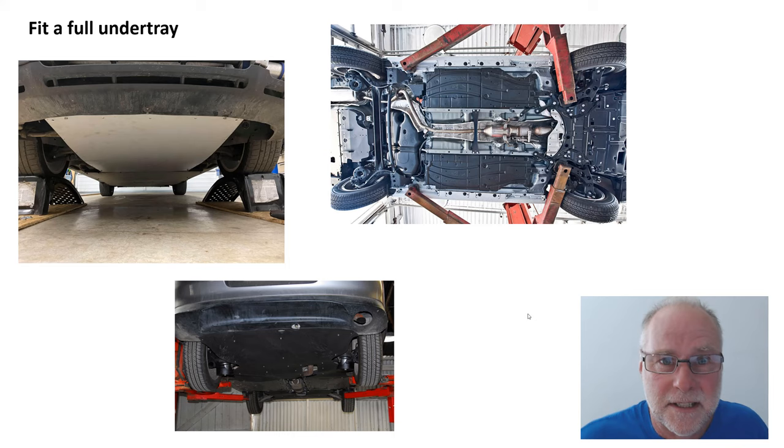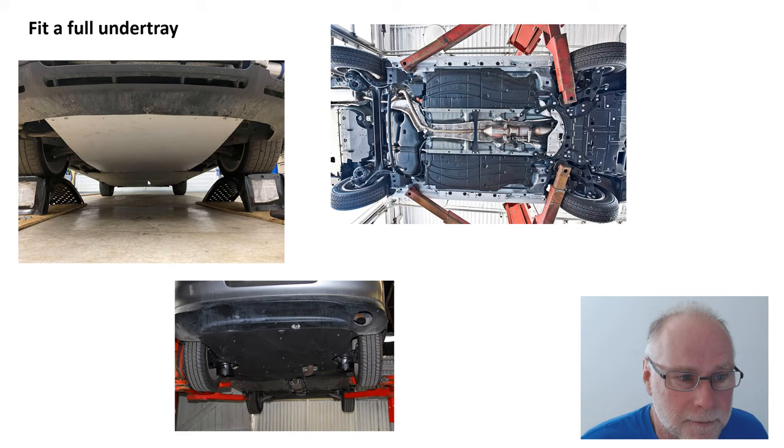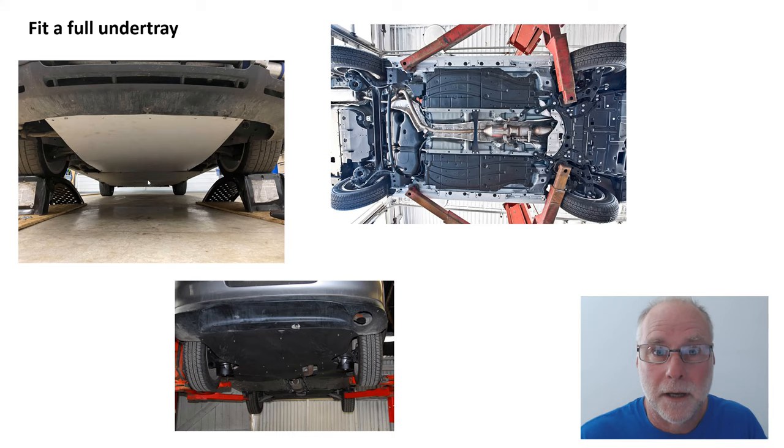Here's Nate's undertray that we've seen in some of the other videos. He's chosen to cover the exhaust. I typically don't do that, but his is a diesel car with a lower exhaust gas temperature. Here is a Toyota Prius, a car designed to be slippery aerodynamically, but the undertray will also help reduce its lift. Here's the front undertray, the two sides undertrays, and the rear undertray.